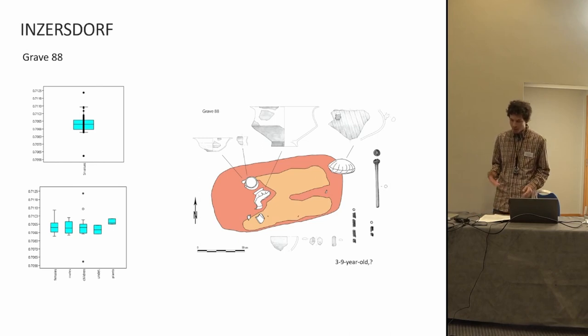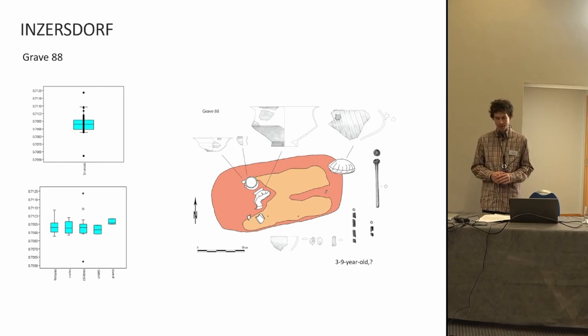Settlements have not recovered in the Treisen Valley. So we do not completely know in which area of the valley the people lived. Based on the strontium values and the diverse landscape, one can assume that the cemeteries, the settlements, and the farmlands were close together, and only single individuals may have migrated to this area.